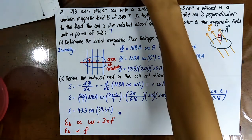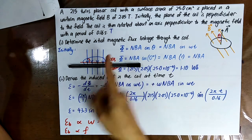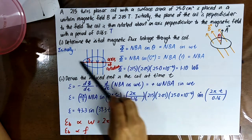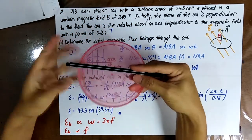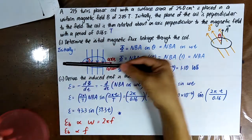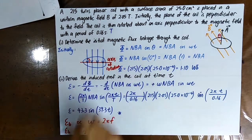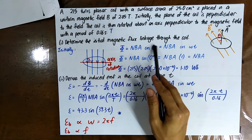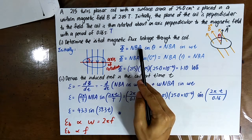When the axis of rotation is perpendicular to the magnetic field — for example, if this is the axis of rotation — then the coil will rotate like this. So phi equals NBA·cosθ, where θ is the angle between B and the area vector.